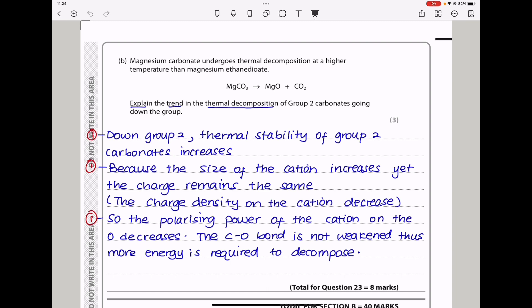And that means the charge density on the cations is going to decrease, and then that means polarization of the anion by the cation is going to decrease, and therefore certain bonds like the carbon oxygen bond are not going to be weakened, and therefore more energy will be required to decompose. So in conclusion, we can say thermal stability increases.